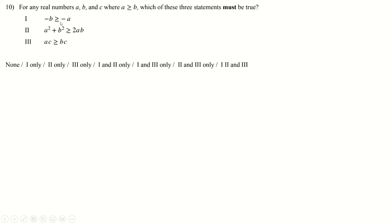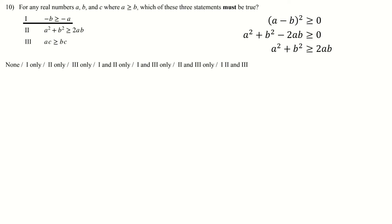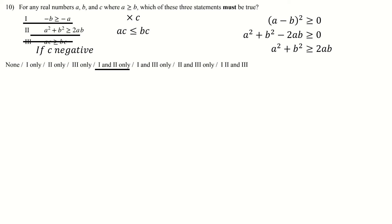Question 10: a > b — which must be true? Statement 1 is literally just this statement multiplied by −1 with the inequality flipped, so it's definitely true. Statement 2 — you may have seen this in A-level maths — is always true regardless of the condition: squaring a number gives something ≥ 0, and expanding and rearranging gives the result, so it's just always true. Statement 3: if c is negative, multiplying both sides by c flips the inequality, giving the opposite of what's claimed, so statement 3 is false. Answers: 1 and 2.